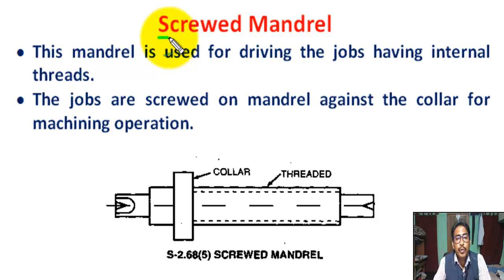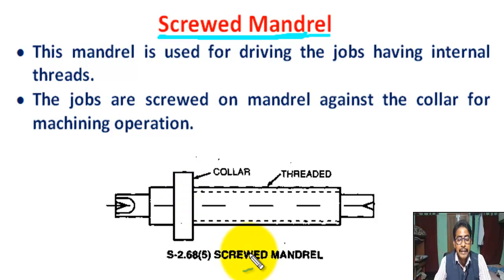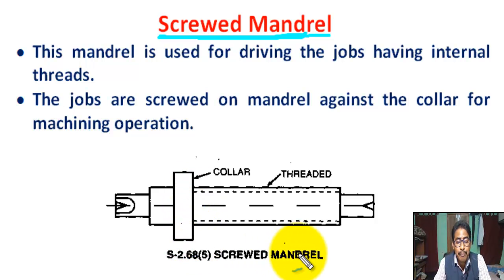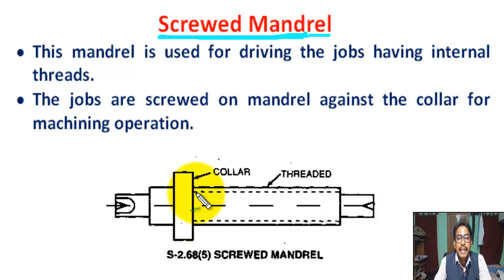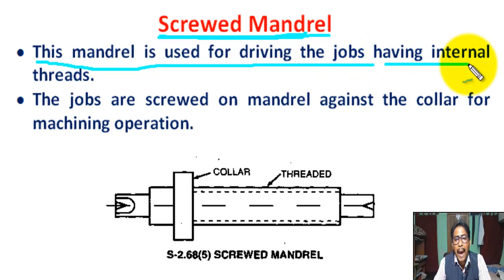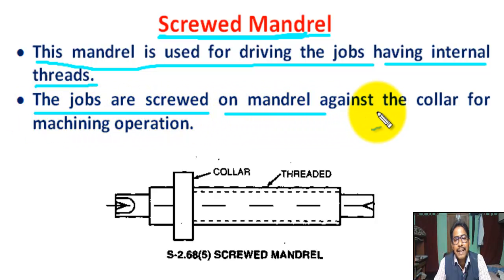Now, what is a square mandrel? A square mandrel is threaded at one end with a collar at the other end, generally the left side. The size and type of thread depends upon the workpiece. In the mandrel there is an external thread, and in the job there is an internal thread. This mandrel is used for driving jobs having internal threads. The jobs are secured on the mandrel against the collar for the machining operation.